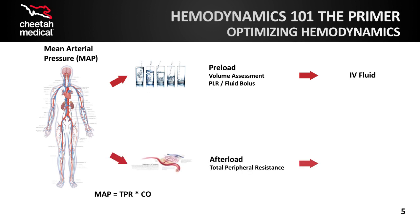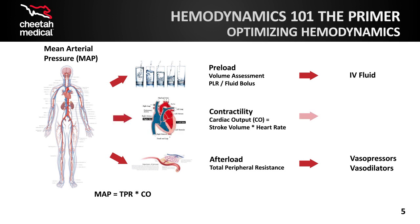Second, we ensure that the vascular tone or afterload is adequate. If vascular tone is abnormal, we can treat with either vasopressors or vasodilators. Third, we ensure that the heart is pumping adequately. If the cardiac output is abnormal, inotropes or further diagnostic tests, such as echo, may be indicated.